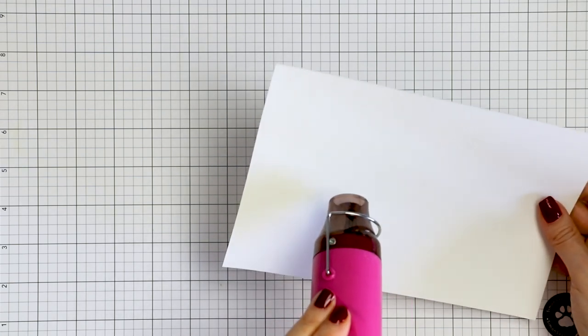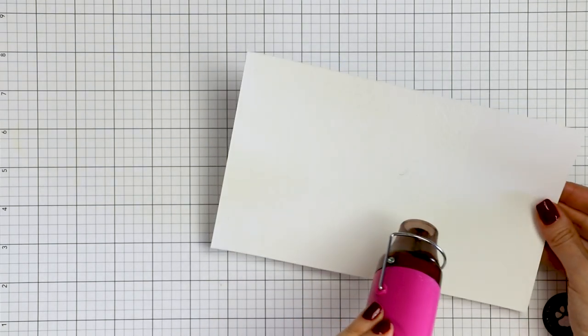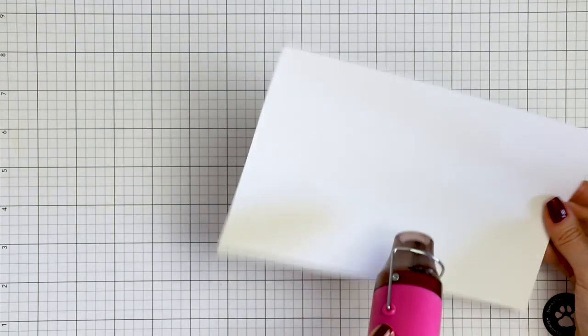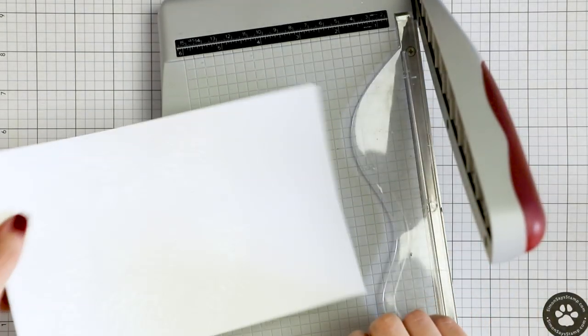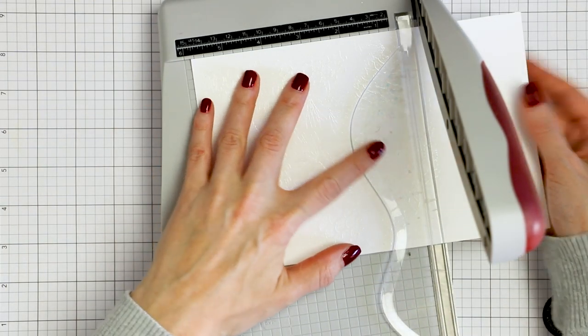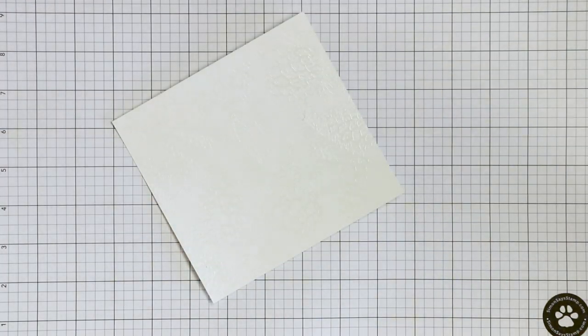With the background embossed it's time to add some color. Now because we embossed this design in clear embossing powder on white card stock the powder will resist the ink and will allow the white background to show through. It's a very old technique yet still one of my favorites to use for quick and easy backgrounds.